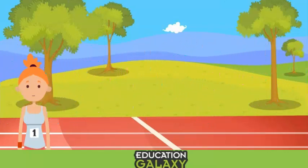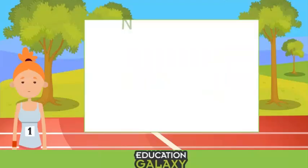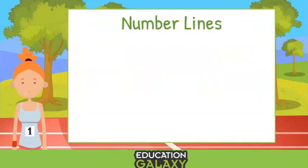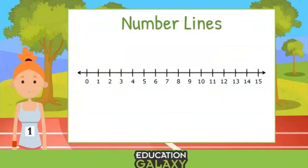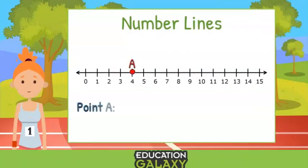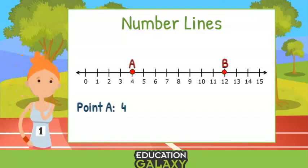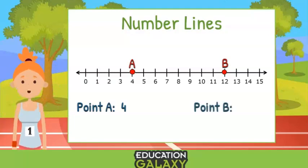When measuring distance, it's helpful to use a number line. Number lines can have points on them. Look at this point A. It's at the position of 4. And this point B, what position do you think it's at? That's right! It's point 12.